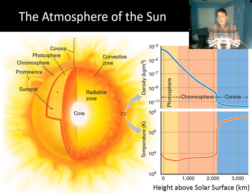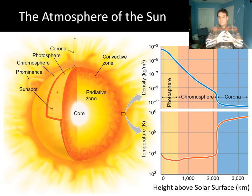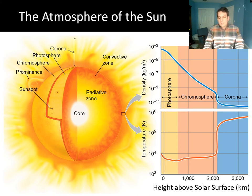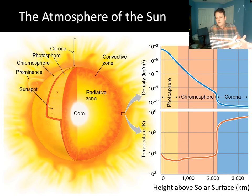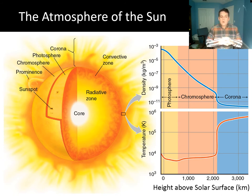By the time neutrinos reach Earth, they're evenly divided: one-third electron neutrinos, one-third tau neutrinos, and one-third muon neutrinos. The detectors were only set up to detect electron neutrinos, so they correctly found only about one-third. The other two-thirds were actually there but went undetected. That was the solution to the solar neutrino problem — it wasn't easy and took 41 years, but we figured it out. Ongoing experiments continue to investigate neutrino physics.